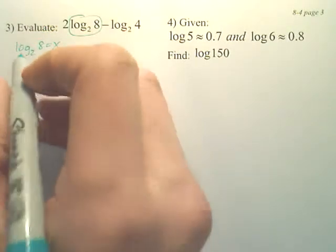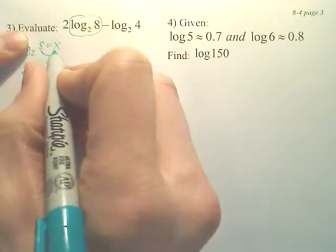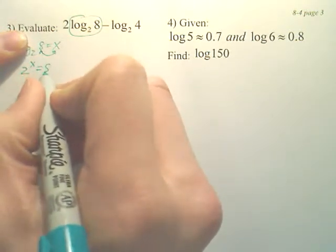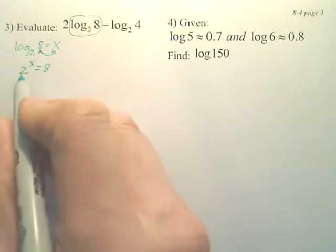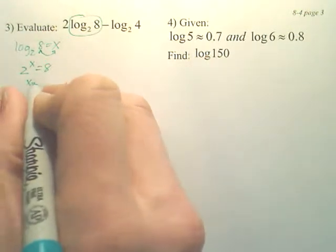To find that, what I do is I drop the log and switch the x and the 8. So it's saying 2 to the what power is 8. That is 3.